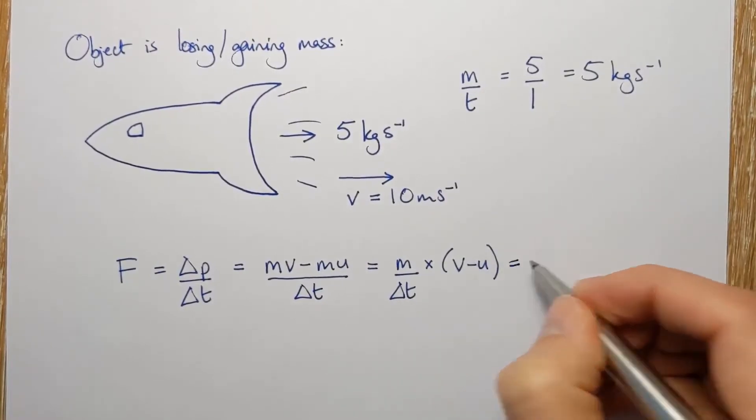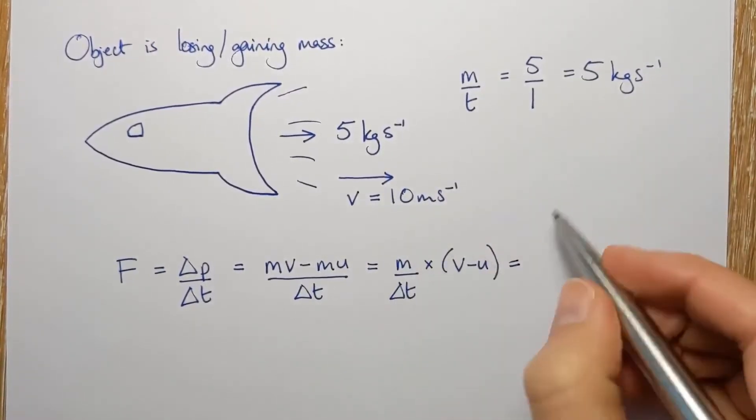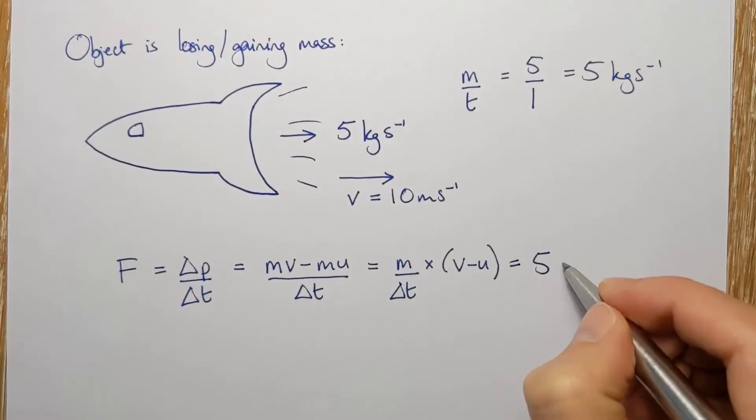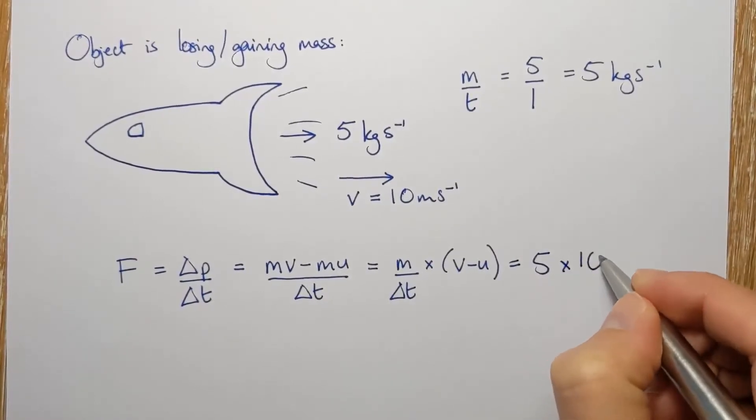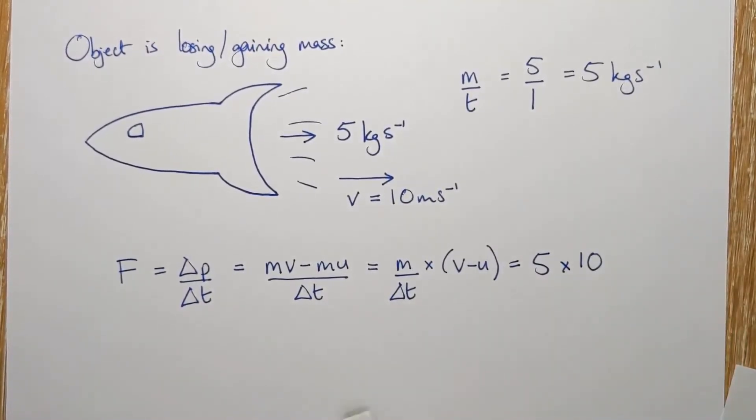So in my example, there's my five kilograms per second times by the 10 meters per second that the gas is speeding up by. And so I get 50 Newtons. That's the force that's required to produce that.